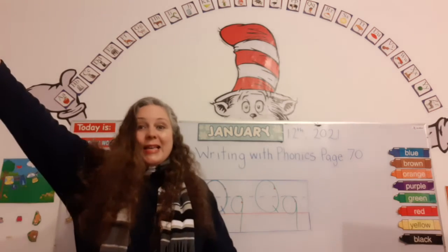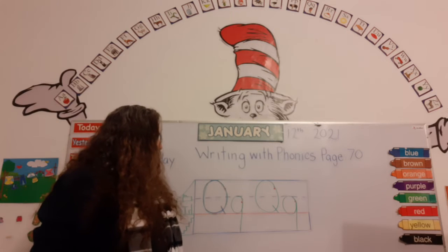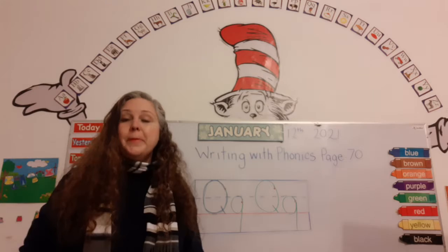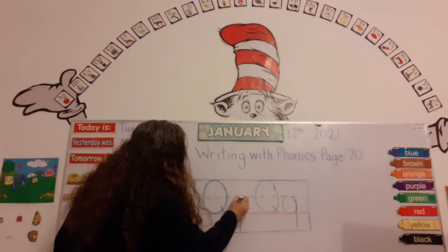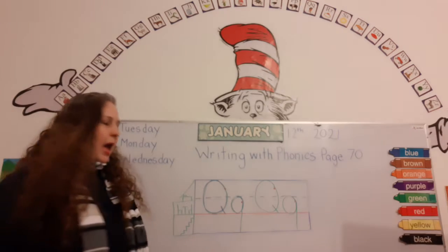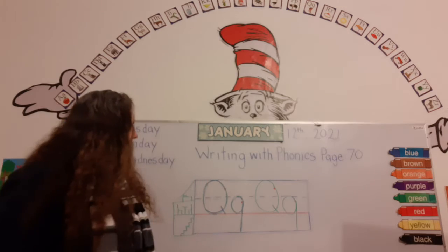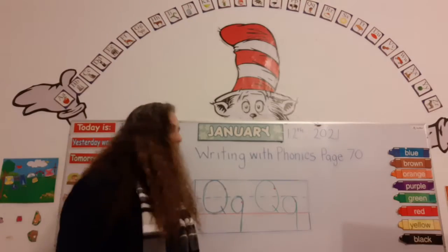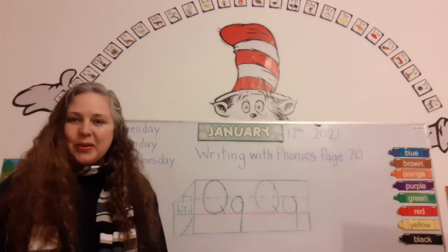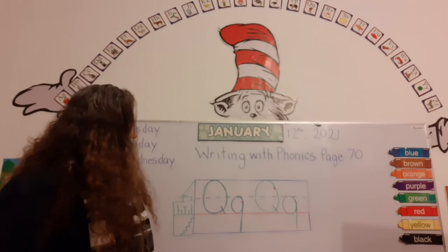The queen is here. Now the lowercase q — look, it goes into the basement. It starts in the middle of upstairs and goes all the way around. We make a little O, and then up, and we give it a little stick going all the way down to the basement, to the very bottom. Sometimes it's just halfway, but this one goes all the way to the bottom of the basement.